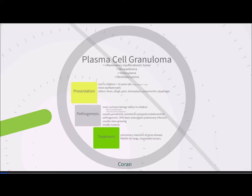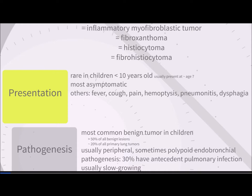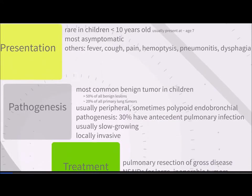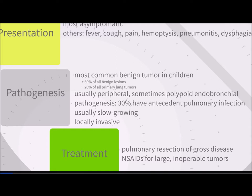Plasma cell granuloma is more common in adults than children, with children making up about 8% of all cases. The average age of presentation is about 7 years old, with about 35% of children between ages 1 and 15. It is the most common benign tumor in children, making up about 20% of all primary lung tumors. Most patients are asymptomatic, but some present with fevers, cough, pain, hemoptysis, pneumonitis, and dysphagia.